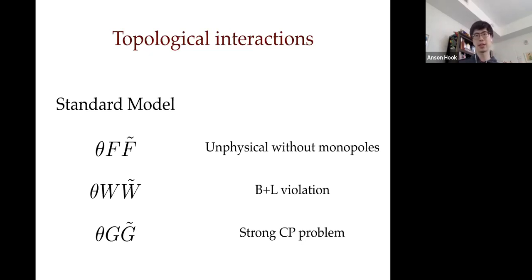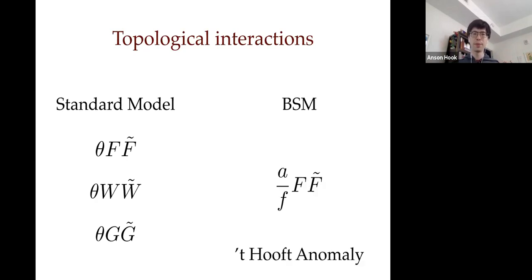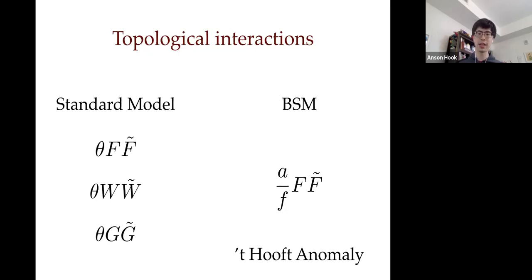These are the three topological objects in the Standard Model, which is well studied. The question I want to ask is: if you're willing to add a new particle, can there be new topological interactions that would teach you a lot about the Standard Model itself? The answer is yes — there's actually one, which theorists call 't Hooft anomalies.